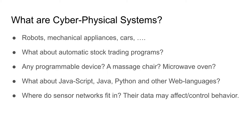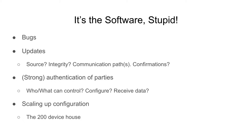I think most of the problems we're going to have with cyber-physical systems will be with the software, mostly because software has bugs. Unless we find ways to write software with fewer bugs, we'll face this problem. For CPS distributed throughout buildings, carried on our persons, or in cars, we need to find ways of updating them to fix discovered bugs. But then: where did the update come from? Is it from the right source? Is it malware? What about the update mechanism itself?